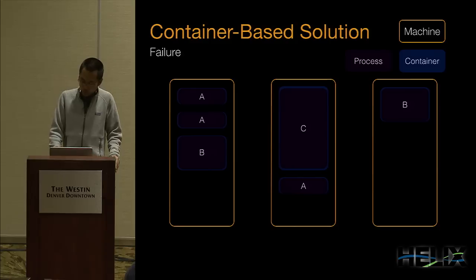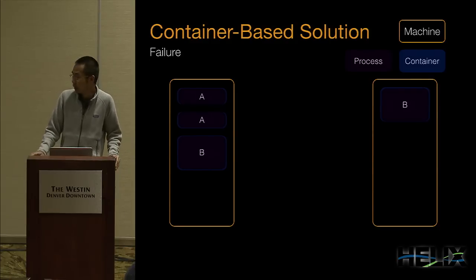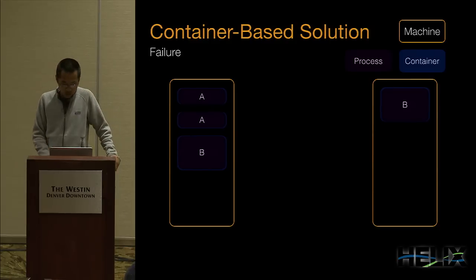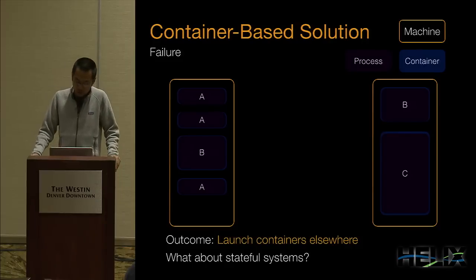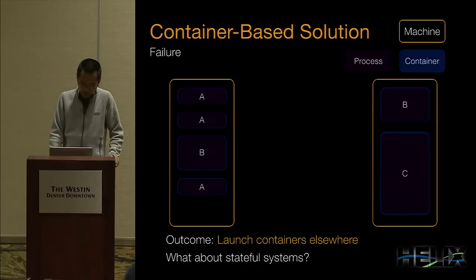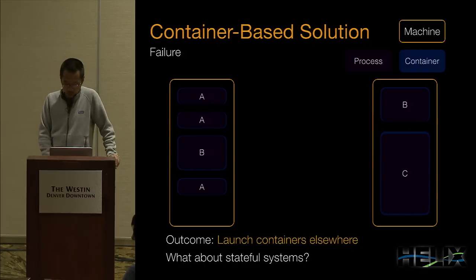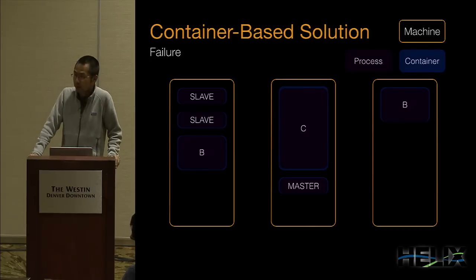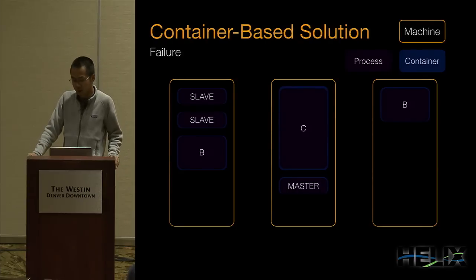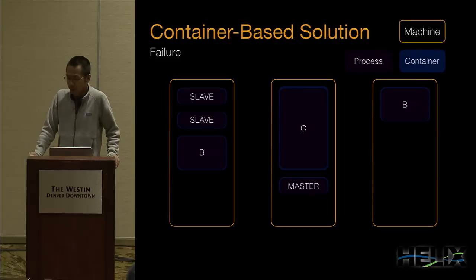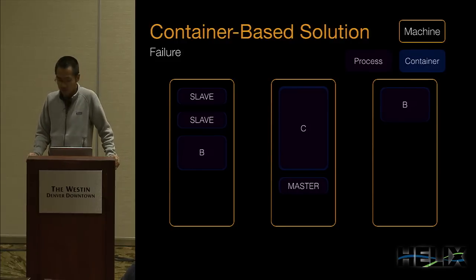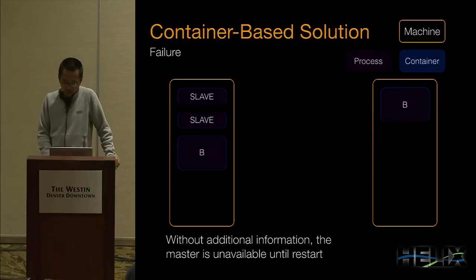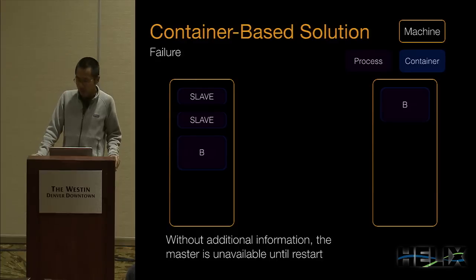To handle failures, physical machines can go down. If the second node goes down, we need to start the container somewhere else on a healthy machine and restart the process. But what about state for stateful systems? For application A, there may be state associated with the containers — for instance, one container running in master mode and two in slave mode. If the second node fails, without additional information, the master becomes unavailable until the container is restarted somewhere else.